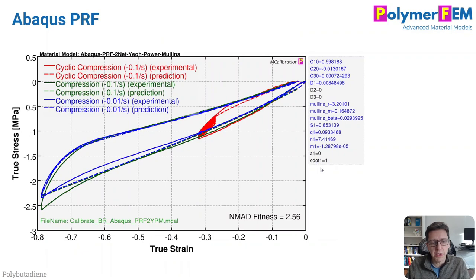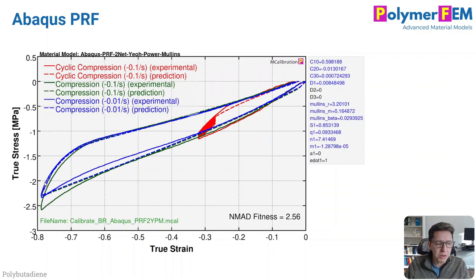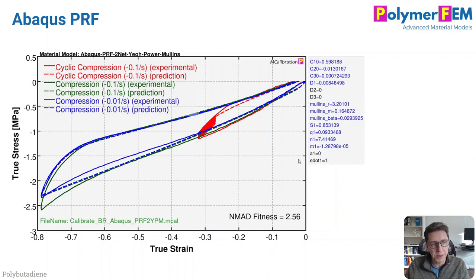Let's try the Abaqus PRF model. This is a two-network PRF model — I typically recommend two networks for rubbers. It includes Mullins damage, and we see very weak strain rate dependence. But overall it's a pretty decent fit. This is again a model that would be reasonably decent for this material, but we can still do better.